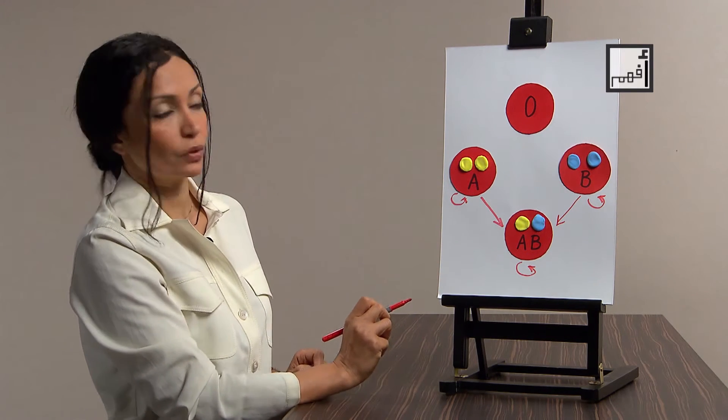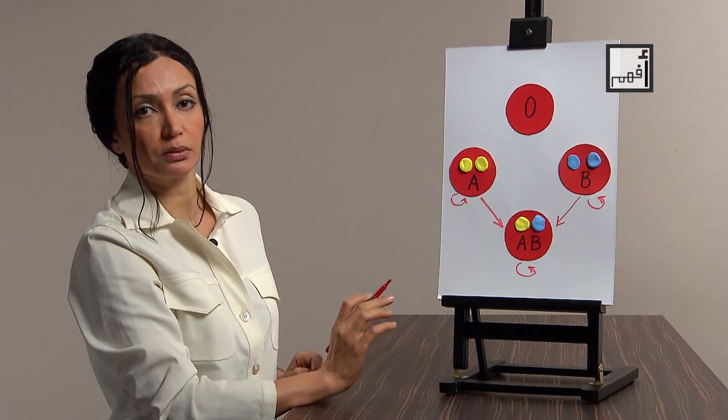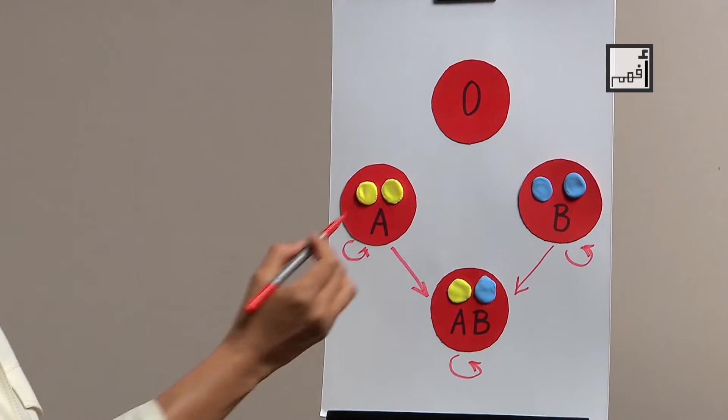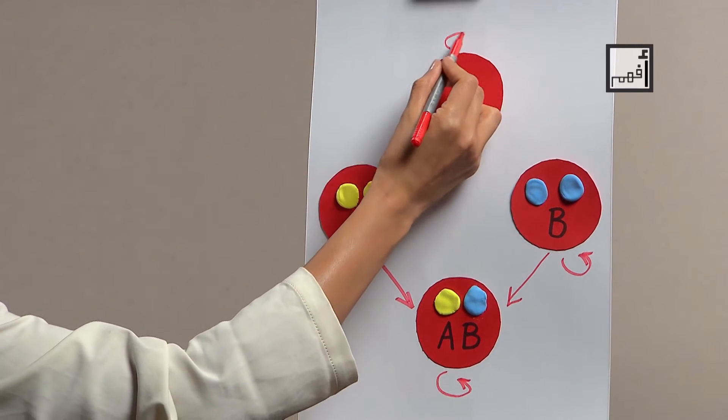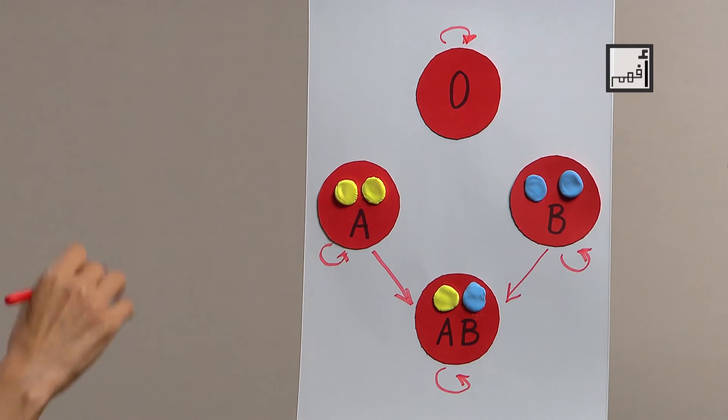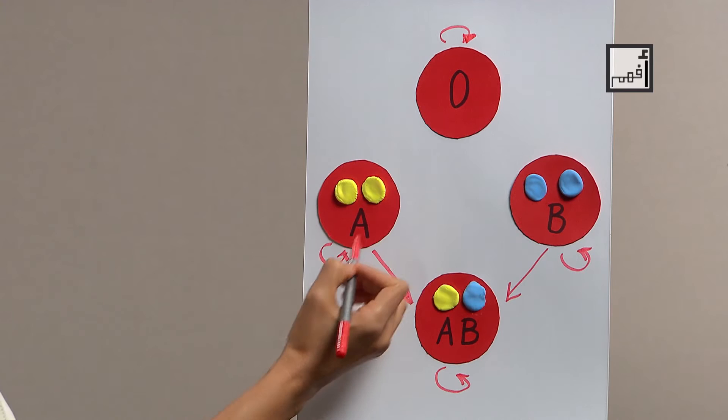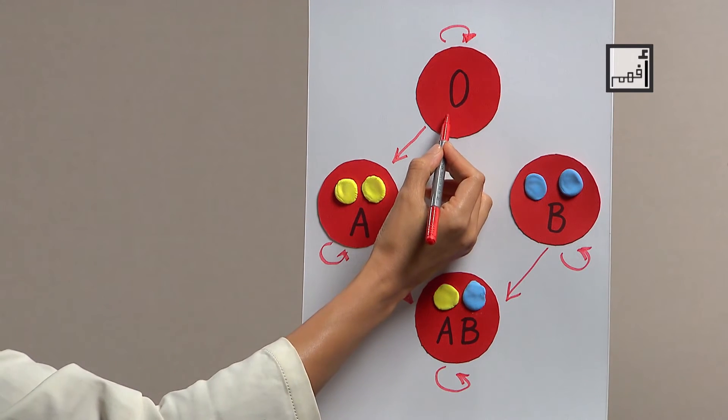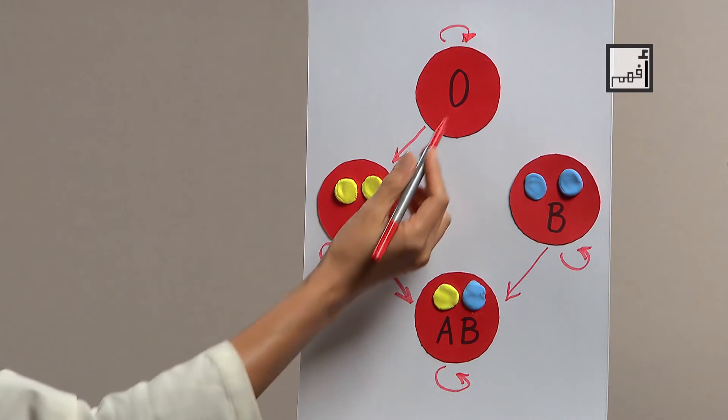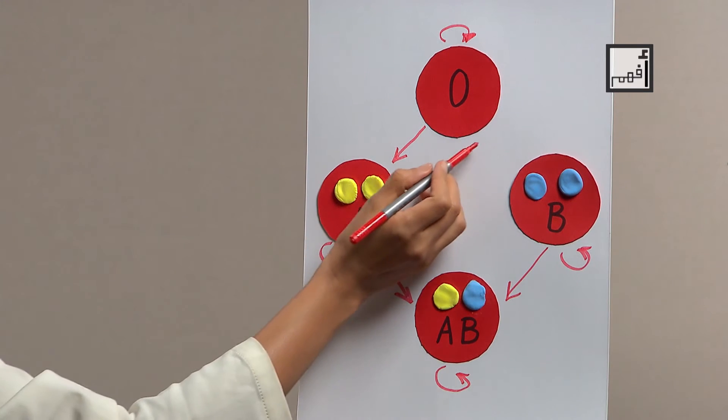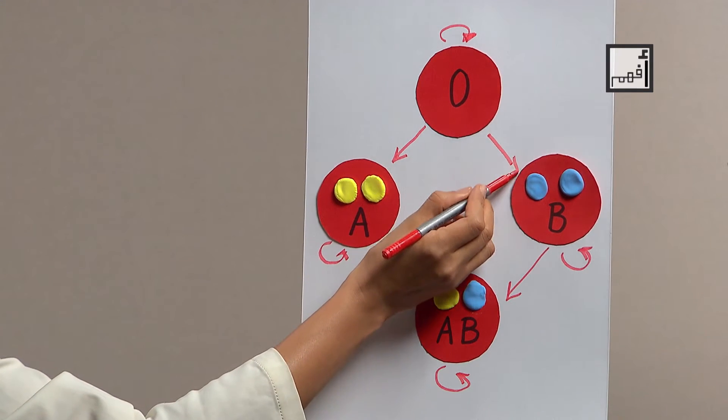Group O or zero means that there are no proteins on the surface that belong to that classification. So O will not be recognized as a foreign body by any other type. That's why group O can donate blood to group O. Group A can receive blood from O as well. The body will not recognize anything wrong. O can donate blood to B and also to AB as well.